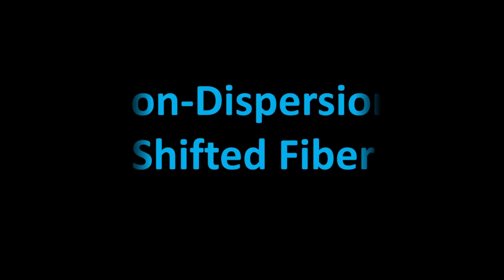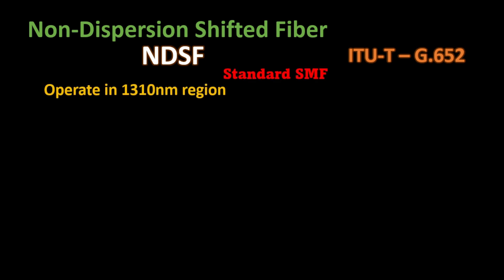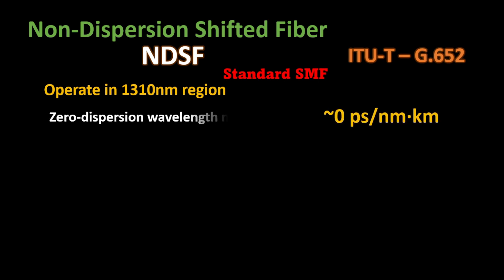Here we cover non-dispersion shifted fiber, called NDSF. NDSF was the first successful single mode fiber and is the most widely deployed fiber type. It is designed for networks operating in the 1310 nanometer region, and has a zero dispersion point around 1310 nanometer.